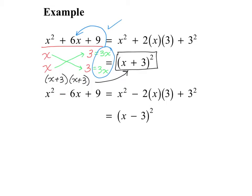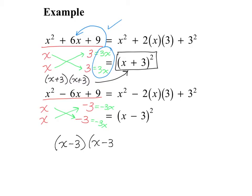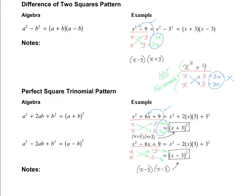The same holds true if there's a minus sign. This would be x times x, and again 3 times 3 — but this time the middle term is negative, so it would be negative 3 times negative 3. Cross-multiplying gives negative 3x and negative 3x, and those two middle terms do add up to the middle term. So the final answer is x minus 3 times x minus 3, which simplifies to x minus 3, all quantities squared. For both of these rules, use whichever method is most comfortable for you.